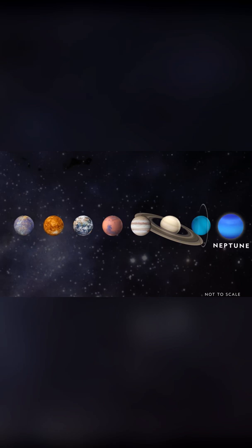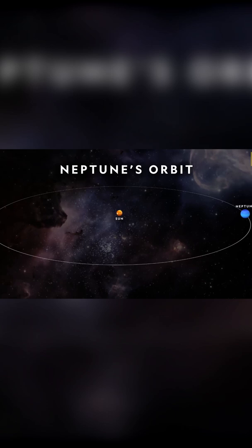Neptune is the eighth planet from the sun. As the most distant planet in the solar system, it takes Neptune about 165 years to travel around the sun.